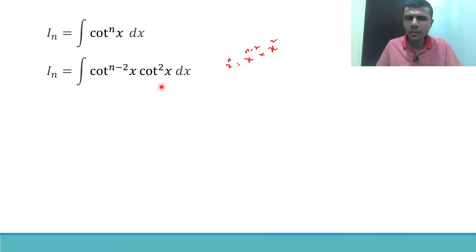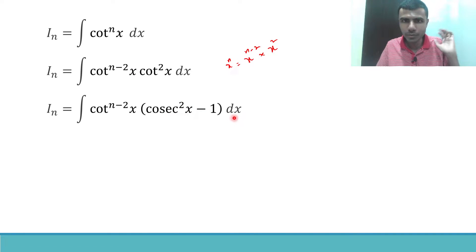Now I want to write this cot square x in terms of cosecant square x. Can you pause the video here and tell me how to express cot square x in terms of cosecant square x? Krishna, can you tell me the answer? Good. Cosecant square x minus 1. So cot square x can be written as cosecant square x minus 1, basic trigonometry.